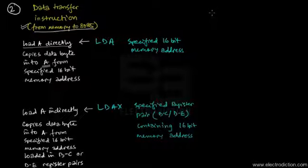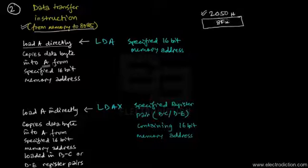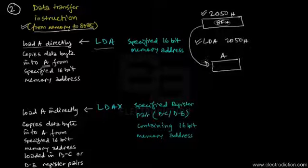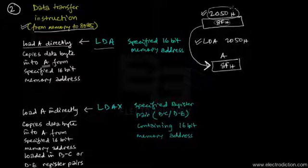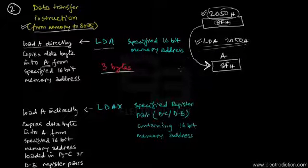Let's give an example. Let's say we have the memory location 2050H, and since this 16-bit memory address corresponds to an 8-bit register in the external RAM chip, let's say it contains a data byte of 8FH. To load this data byte into the accumulator register using LDA, we write LDA 2050H. Once this instruction gets executed, the accumulator register contains 8FH. Also keep in mind that LDA is a 3-byte instruction — 1 byte for LDA and 2 bytes for the 16-bit memory address.